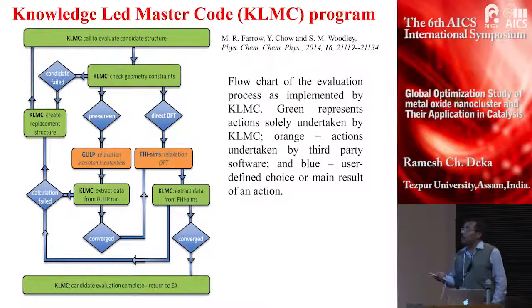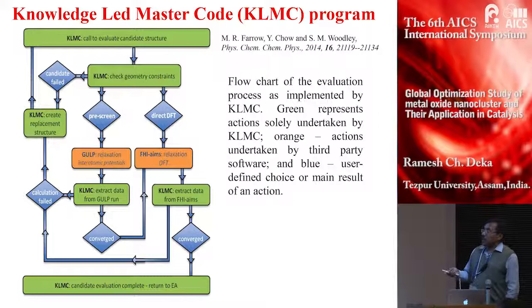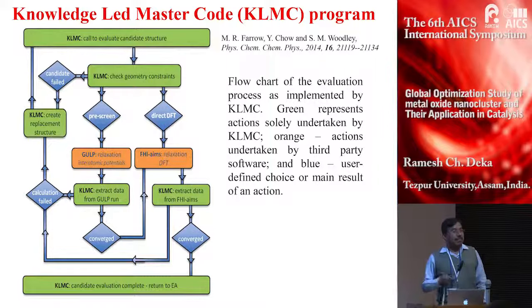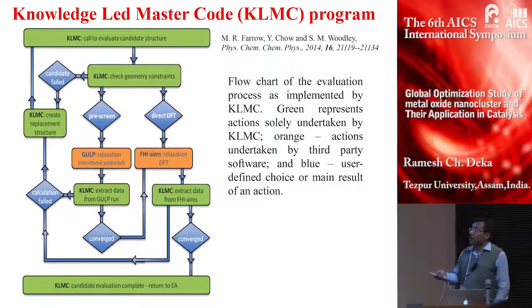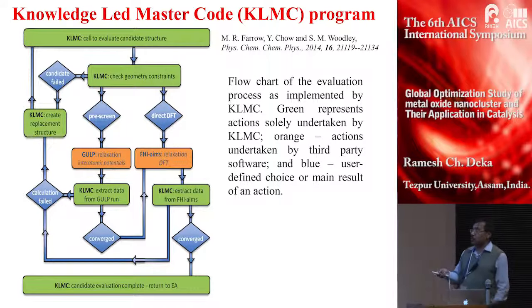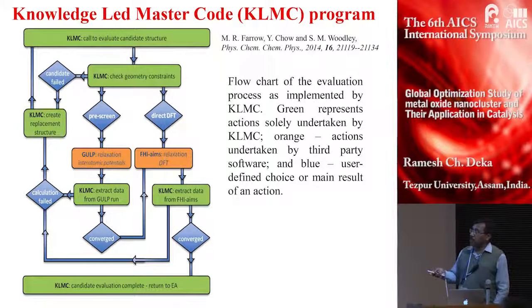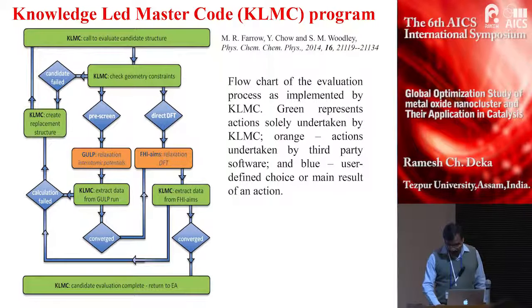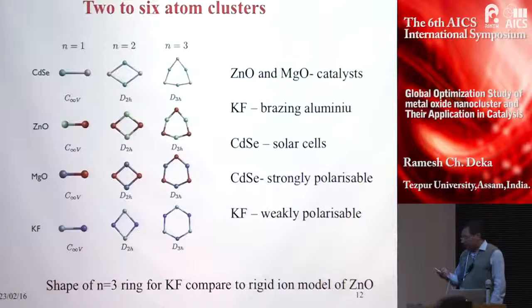This is the algorithm for the KLMC program. For one particular nanocluster size, we can generate about 50 different structures randomly. We can pre-optimize using an interatomic potential program called GULP — General Utility Lattice Program — or we can perform DFT density functional calculations. We have used the FHI-aims program for DFT calculation, and then we check for stability.